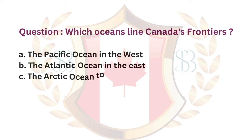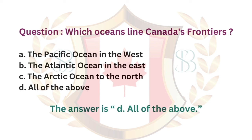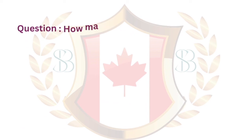Question. Which oceans line Canada's frontiers? a. The Pacific Ocean in the west. b. The Atlantic Ocean in the east. c. The Arctic Ocean to the north. d. All of the above. The answer is d. All of the above.